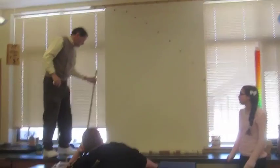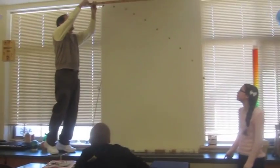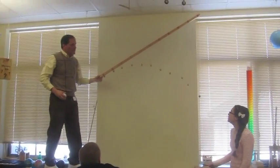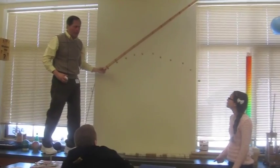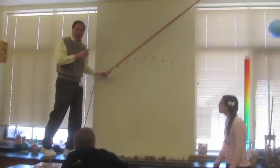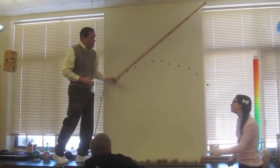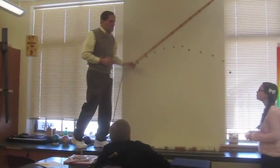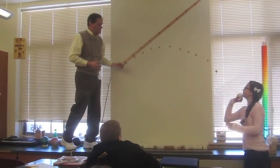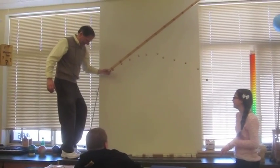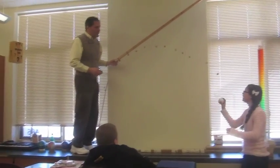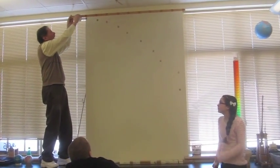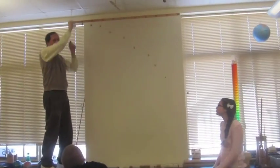Now we can take it one step further. If I put this on an angle, it's still going to follow that same path, changing by the square of the whole numbers still. This is simply a model showing that same thing as what we saw on your paper.